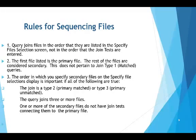Some rules for sequencing the files: the query joins files in the order they're listed on the specify file selection screen, not in the order that the join tests are entered. The first file is considered the primary file; the rest are considered secondary. However, this does not pertain to join type 1, which is matched records — we'll cover that in a moment.